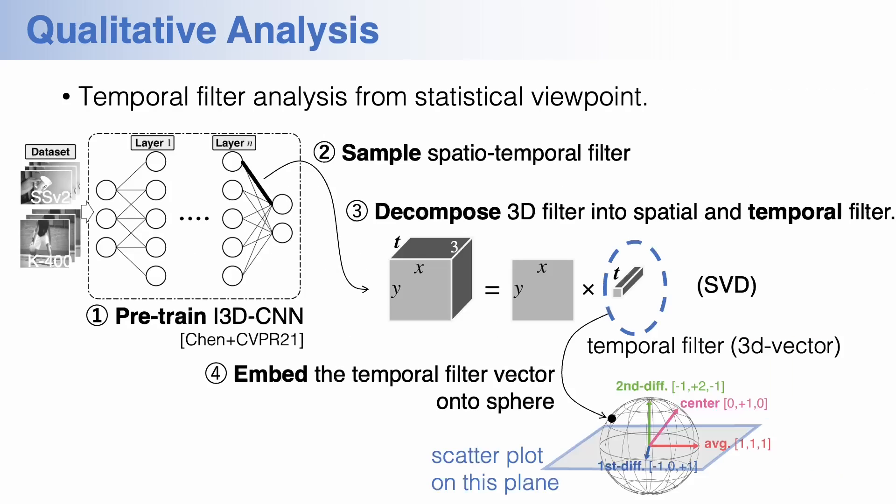We first analyze spatial temporal filters. This is conducted in four steps. First, 3D CNN is pre-trained on action classification datasets. In this study, we apply I3D ResNet to something-something and Kinetics datasets.